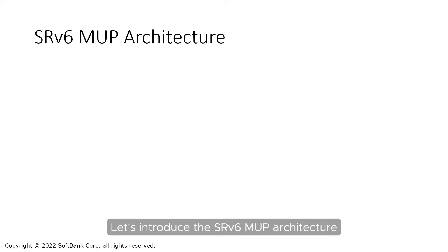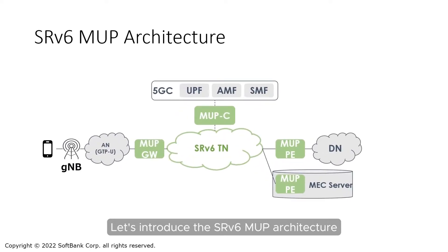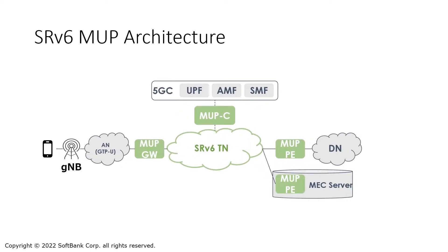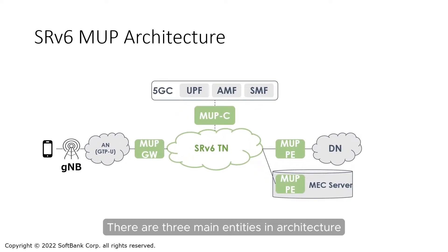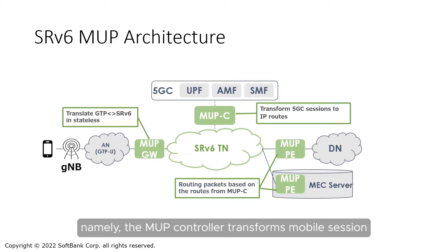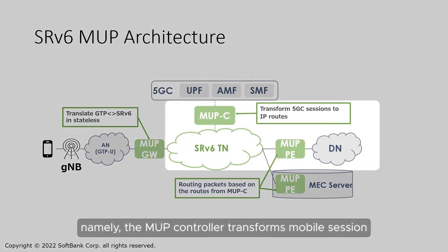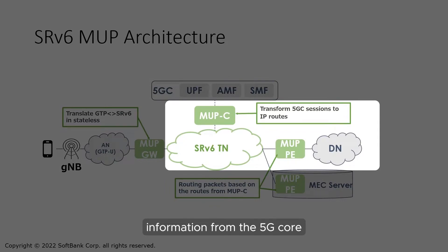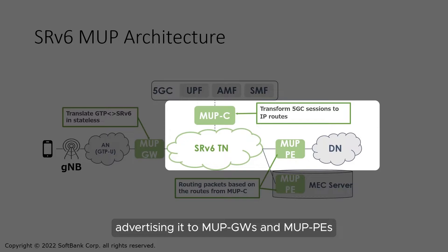Let's introduce the SRV6 MUP architecture. There are three main entities in the architecture. The MUP controller transforms mobile session information from the 5G core into IP route information, advertising it to MUP gateways and MUP PEs through Border Gateway Protocol.